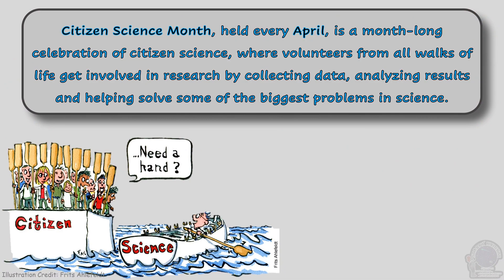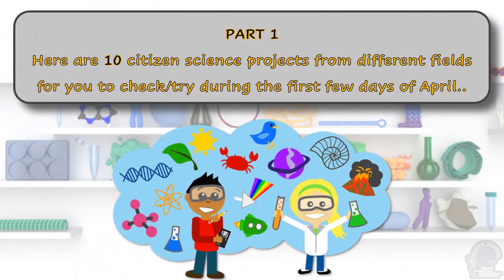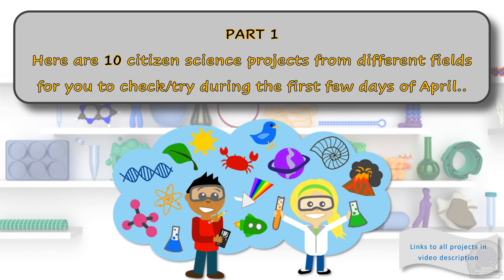Citizen Science Month, held every April, is a month-long celebration of citizen science where volunteers from all walks of life get involved in research by collecting data, analysing results, and helping solve some of the biggest problems in science. Here are 10 citizen science projects from different fields for you to check or try during the first few days of April. Links to all the projects will be provided in the video description below. Please check the links for more information about each project.